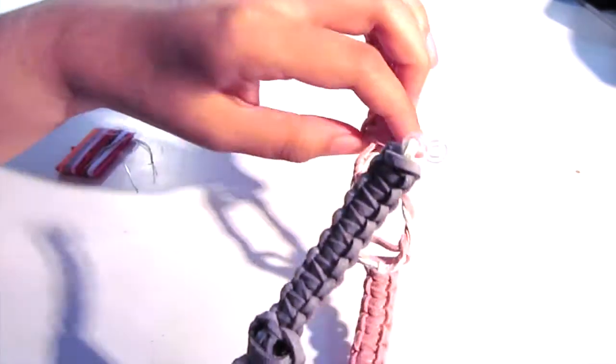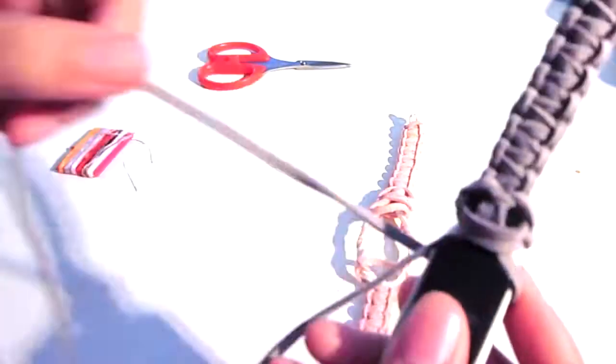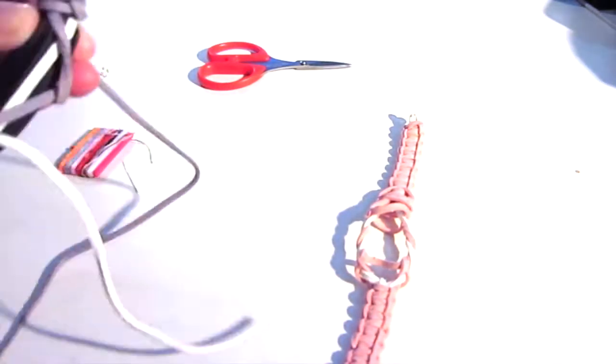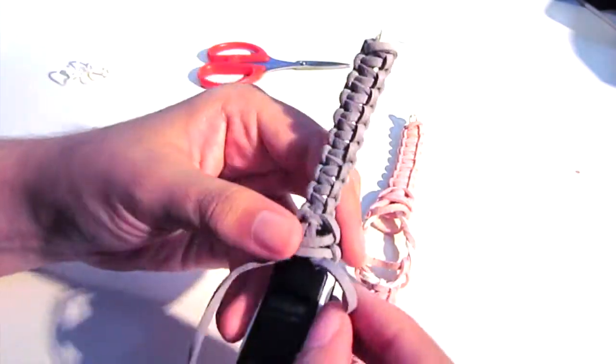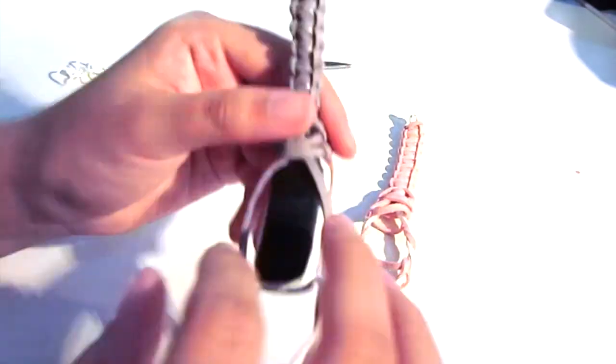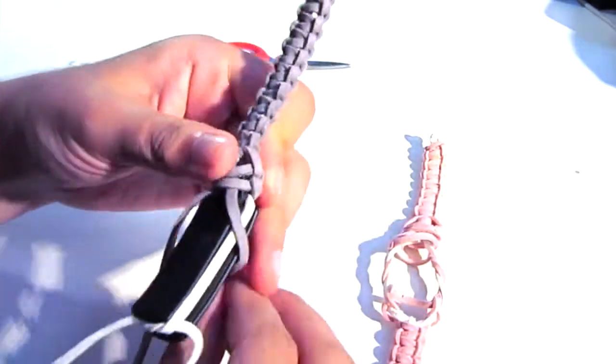Then you're going to take the gray and make a square knot around the entire tracker. So this is going to create these two little bands that will help hold it in place, and it looks like a little nice design on the top of the band.